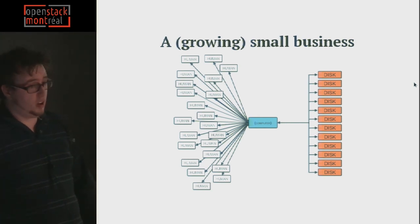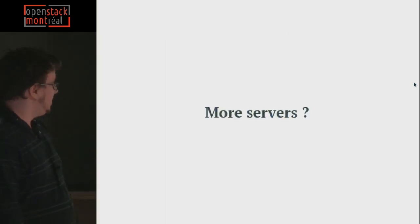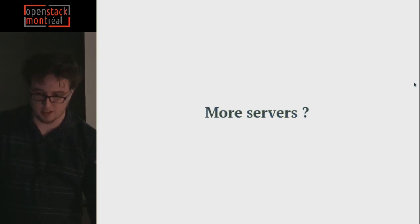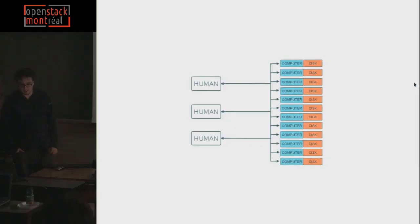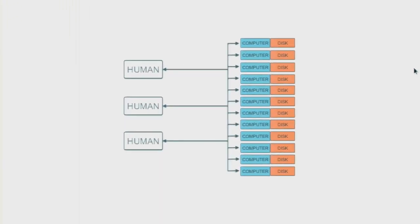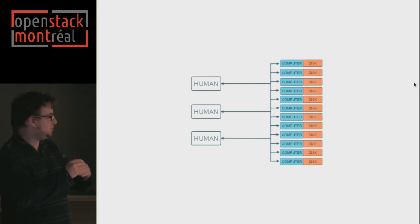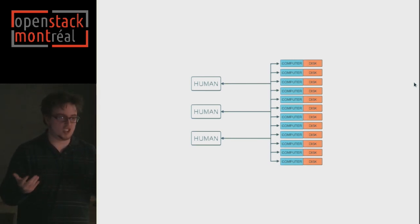This is a problem often tackled by adding more servers. So then you have a lot of humans, a lot of servers, a lot of disks. But the problem with that is how do you address each of these logical computers? Each of these are different servers — you maybe have different file shares on different servers. It's a mess to deal with.